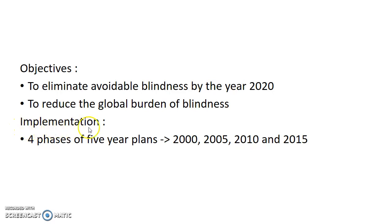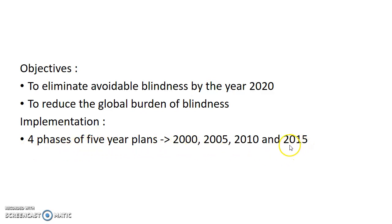Vision 2020 is implemented through four phases of five-year plans. The first five-year plan was started in 2000, and the present one is the plan which was started in 2015.